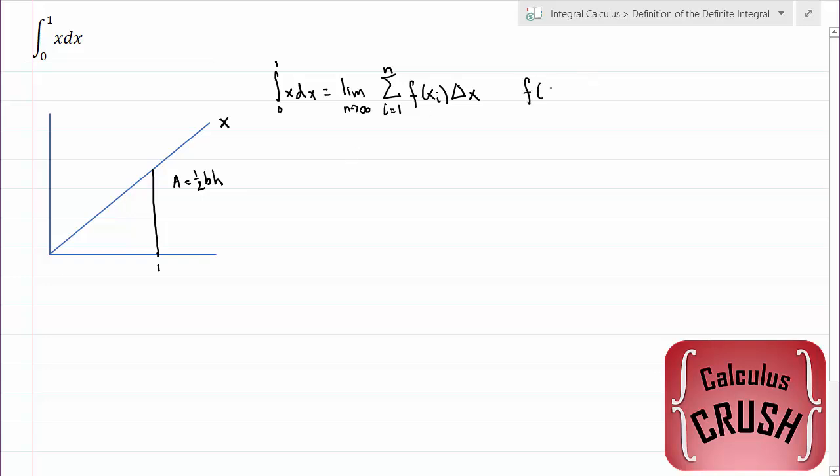Now what is f of xi? Well, f of xi is just our function, which is xi. If we had another function, for example x squared, then f of xi would be xi squared.